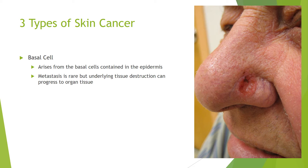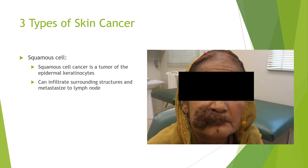There are three types of skin cancer. The first is basal cell, which arises from the basal cells contained in the epidermis. Metastases are rare, but underlying tissue destruction can progress to the internal organs of the body. The second type is squamous cell, which is a tumor of the epidermal keratinocytes, known for infiltrating surrounding structures and metastasizing to the lymph nodes.